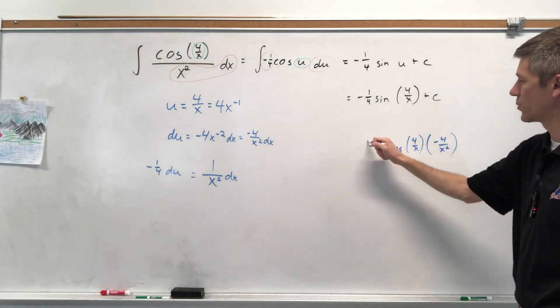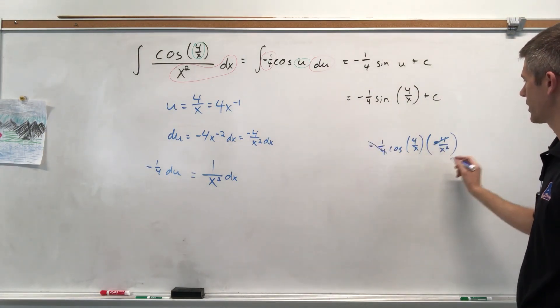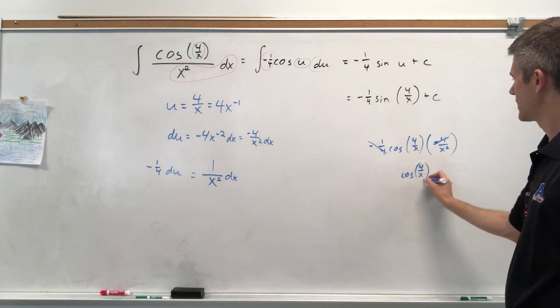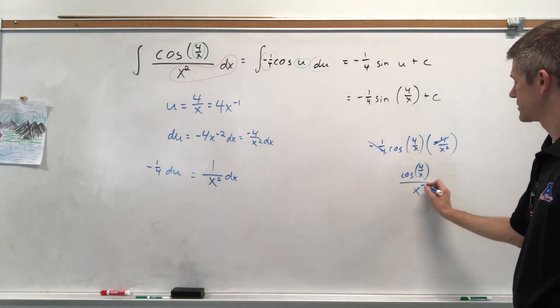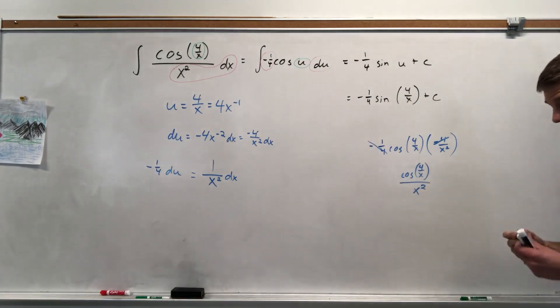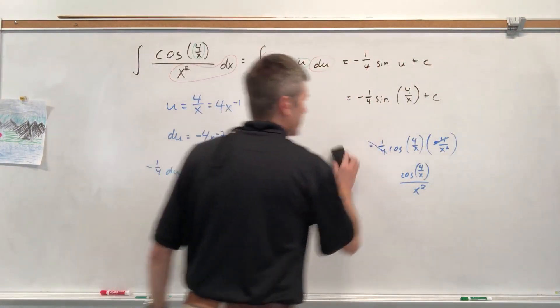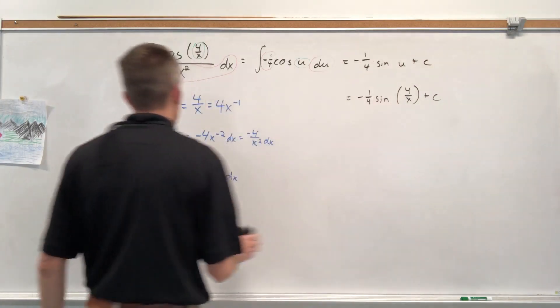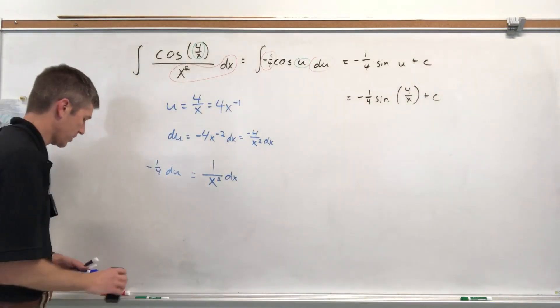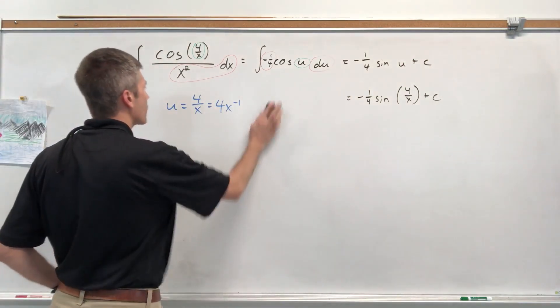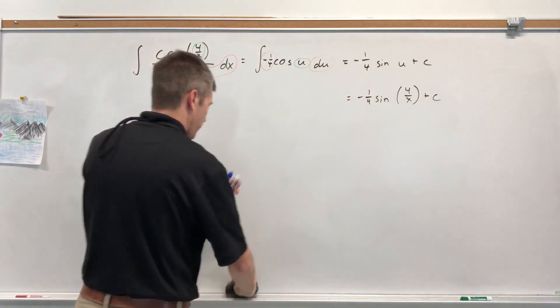And this negative 1 fourth cancels with this negative 4. And it would give me cosine of 4 over X times 1 over X squared. There it is. It works. It works beautifully. All right, let's move on to the next problem. I'm going to erase some of this. I may not erase the whole thing. The next problem is kind of tricky. And it's a lot of fun.